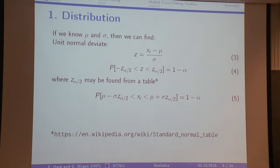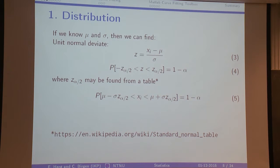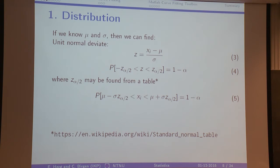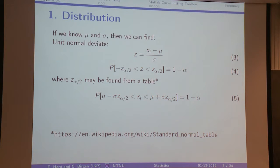If alpha is five percent, for example, you would go into a table, find the two values that conform to that alpha, and you could say that you know with 95% certainty that you will get a value between these two points. If you rearrange — and since this is known, you can find it from a table; I have a link for the one I found on Wikipedia, it's the first thing that comes up when you Google for it. All you need to know is alpha, because the C values are only dependent on alpha.